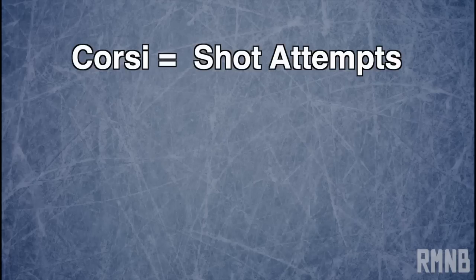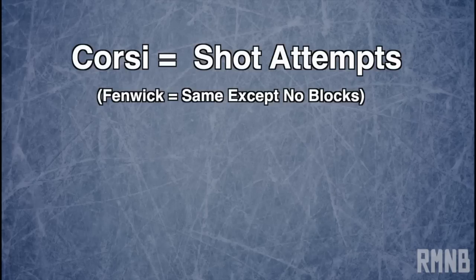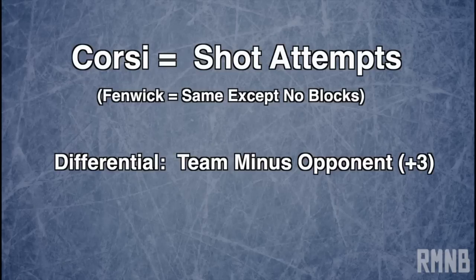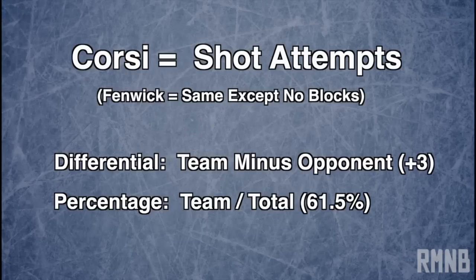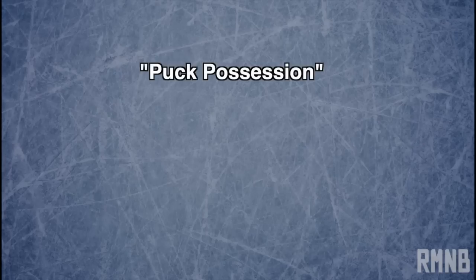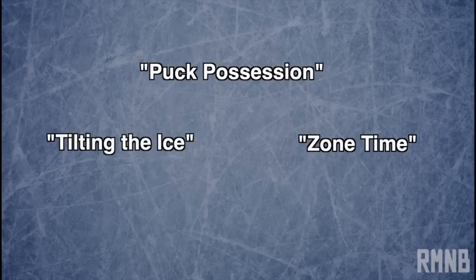That's all Corsi is — it's just counting up shot attempts while someone's on the ice. Fenwick is the same thing except you don't count blocks. And you can express it as a differential — Matt's team had three more shot attempts than the other team — or as a percentage: Matt's team had 61.5% of the total shot attempts. You can call it puck possession, tilting the ice, zone time, time on attack, but most people just call it Corsi.